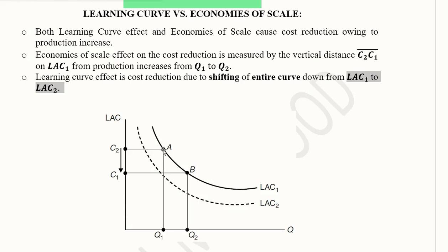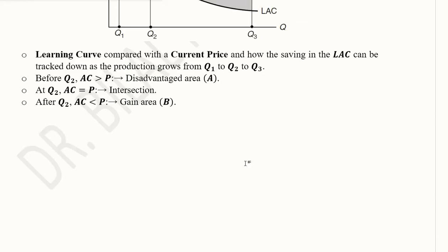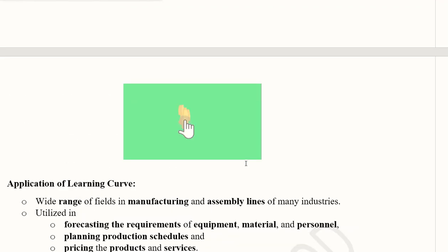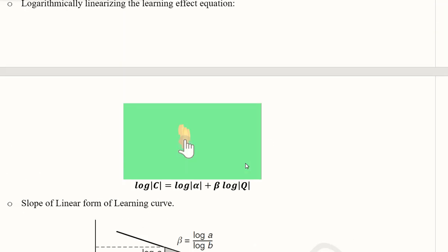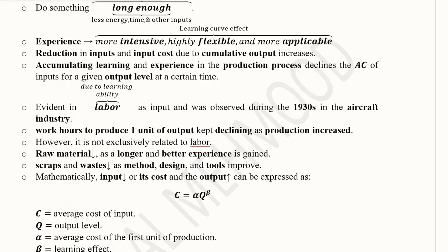For example, at output Q1, the cost was initially at C2 on LRAC1 but now falls close to C1 on LRAC2 due to the learning curve shift. At point B, the cost on LRAC1 declines to a lower level on LRAC2. The key difference: economies of scale involve movement along the same LRAC curve, whereas the learning curve effect involves a downward shift of the entire LRAC curve. This topic covers the learning curve from a theoretical, mathematical, diagrammatic, and numerical perspective.